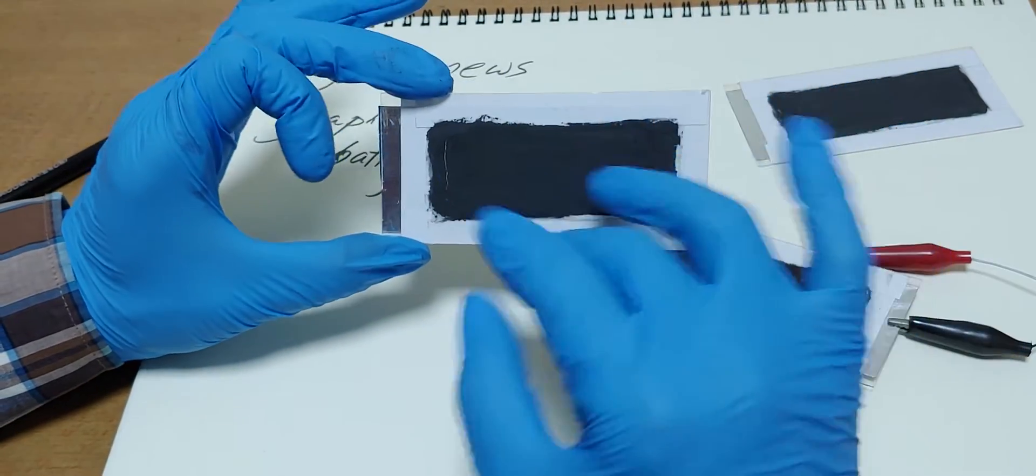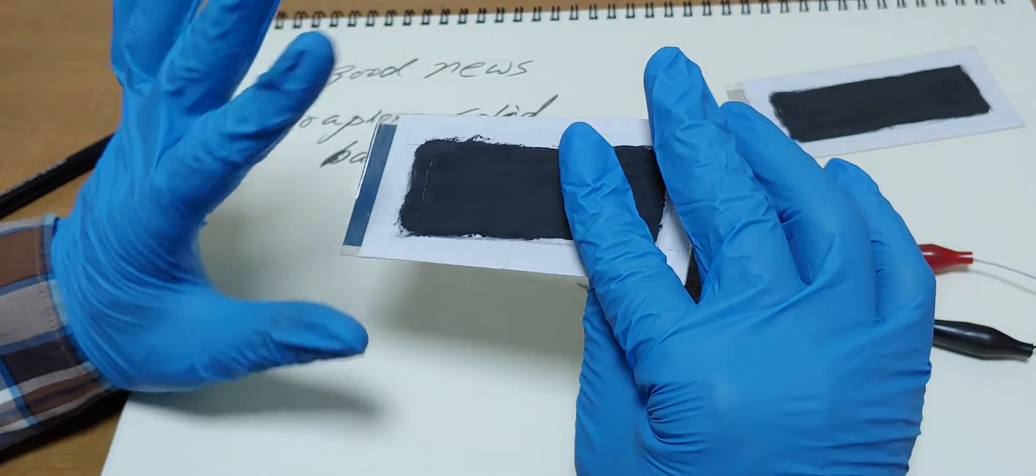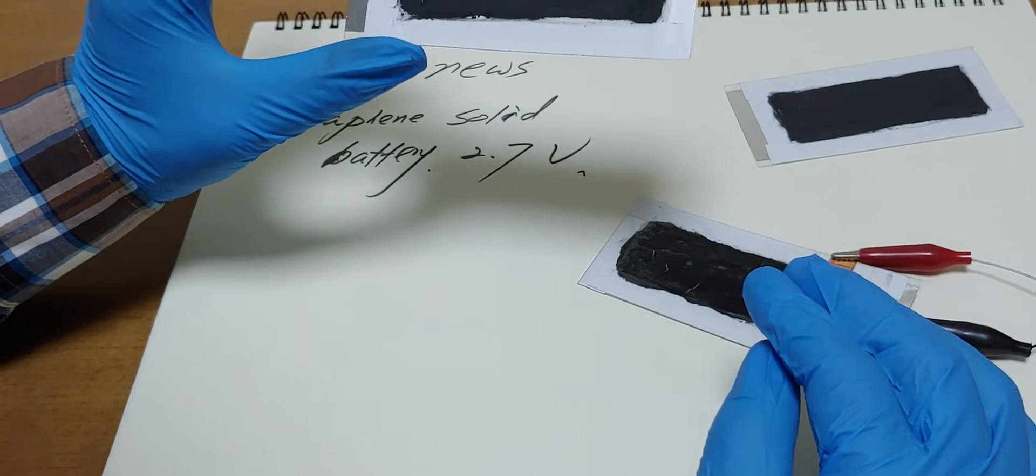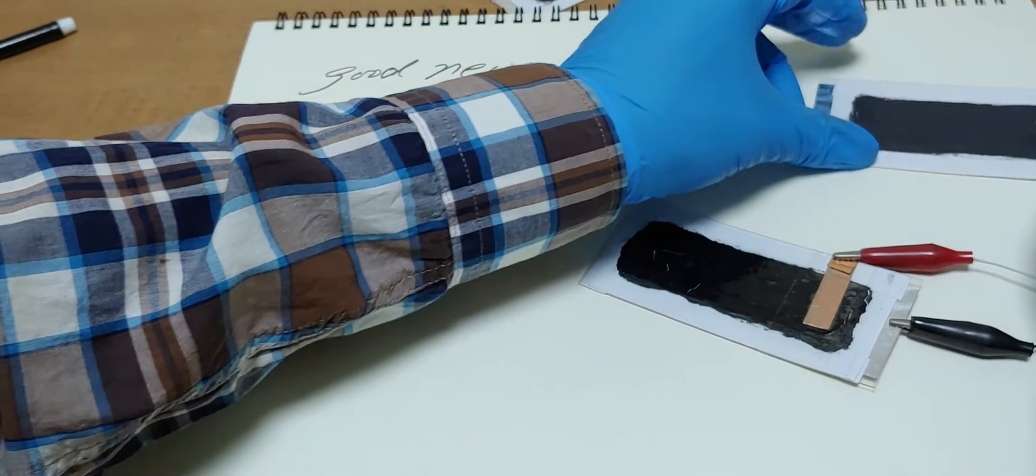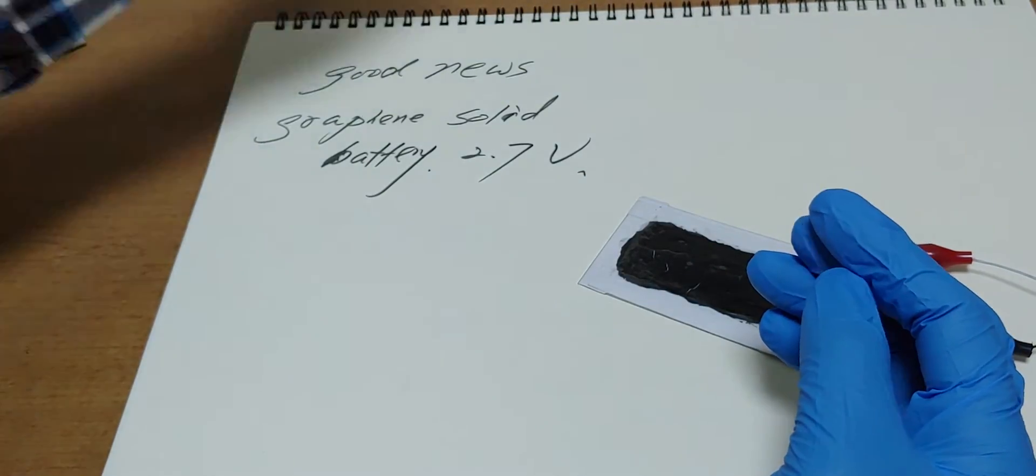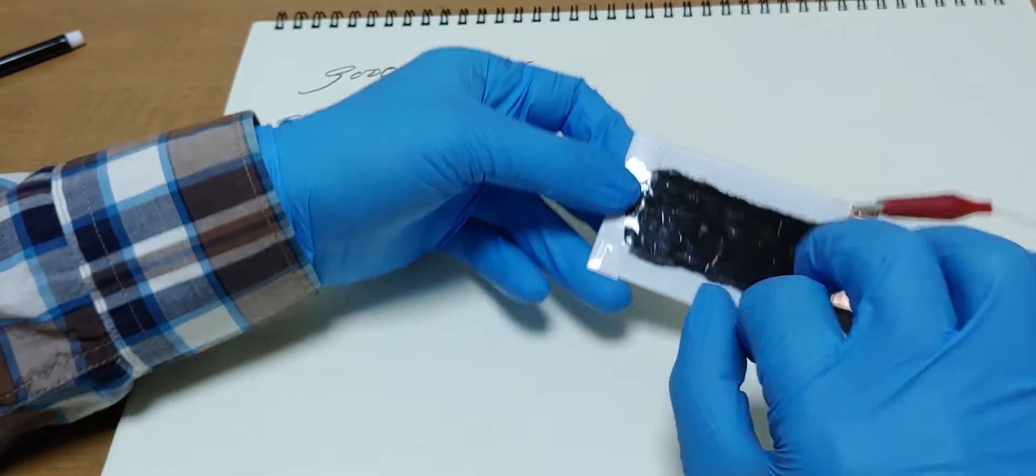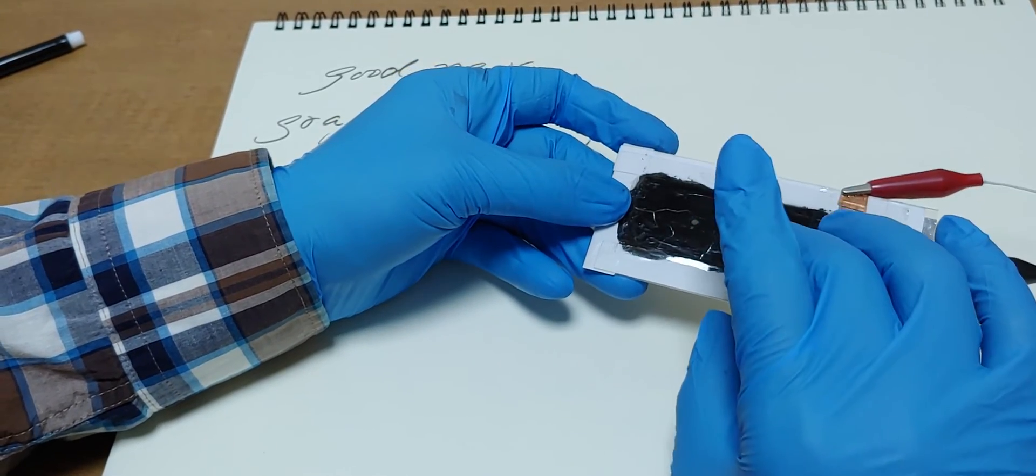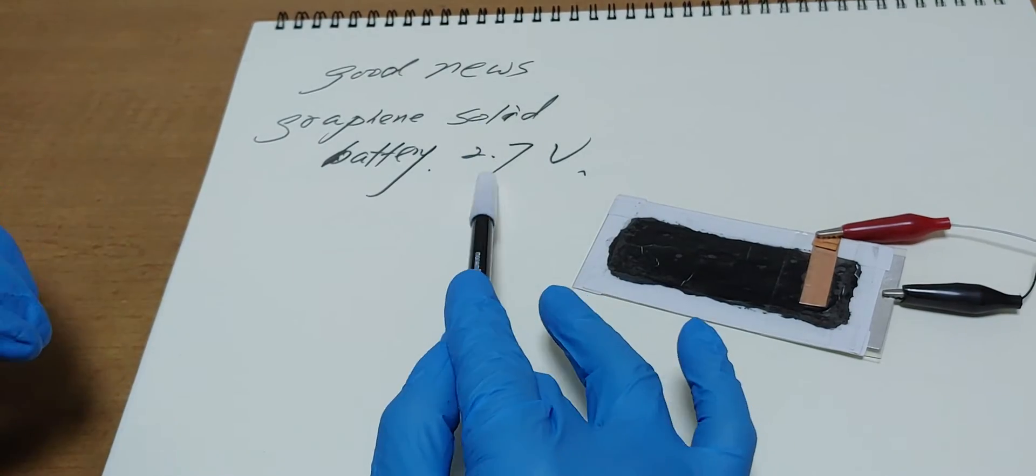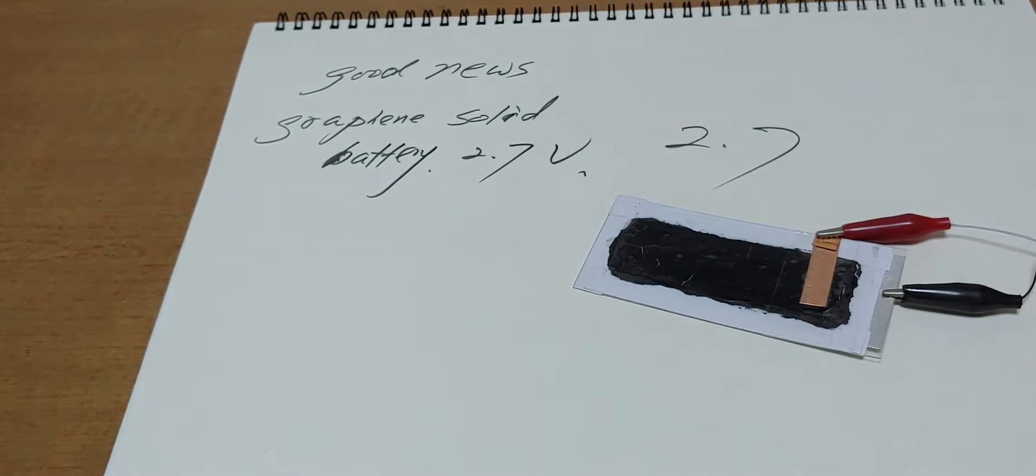This is the process to make another battery. Maybe I found some defect here. Here too. Perfectly solid. No electrolyte. No separator. But 2.7V. Miraculous.